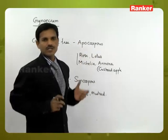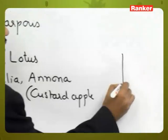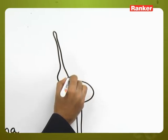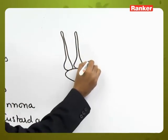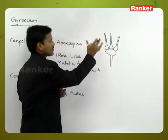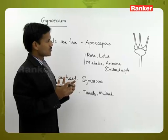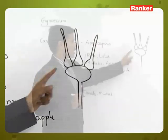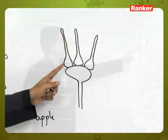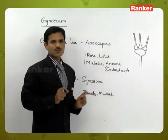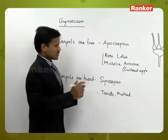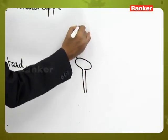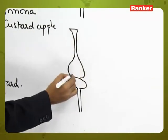In the Apocarpous condition, a number of carpels are present on the Thalamus but they are not fused — they are free. After fertilization, each and every ovary develops into a small fruitlet. So in the Apocarpous condition, each and every ovary develops into a small fruitlet.